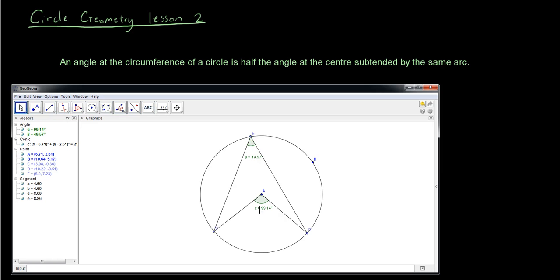You can see that angle A, which is at the center of the circle, is double the angle on the circumference. Or we can also say the angle at the circumference is half the angle at the center subtended by the same arc, which is right here from C to D.